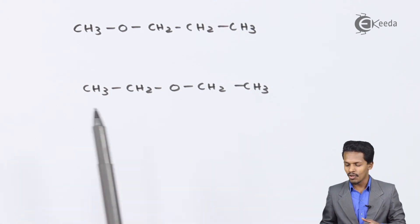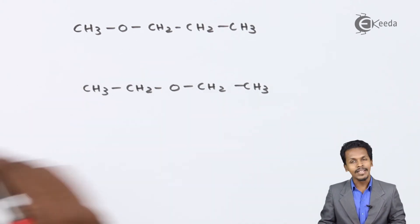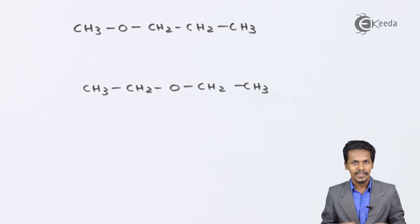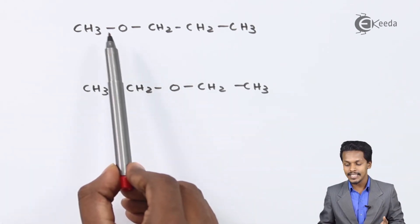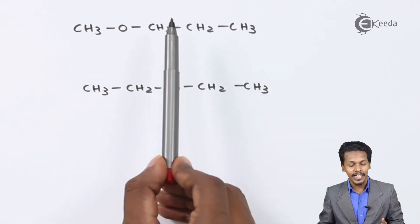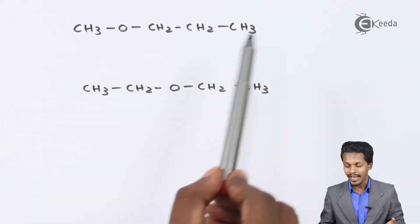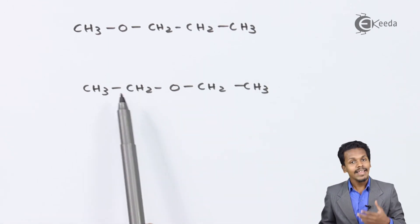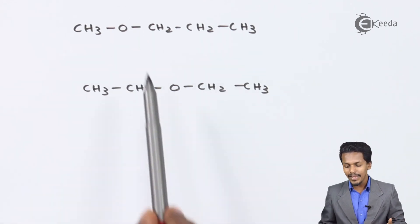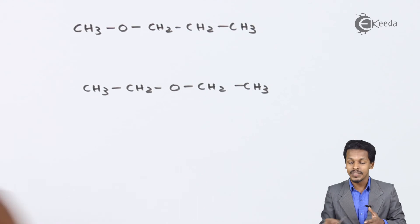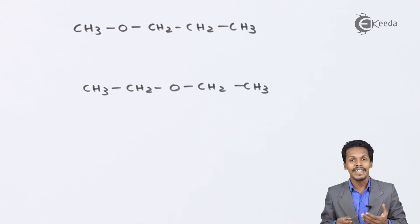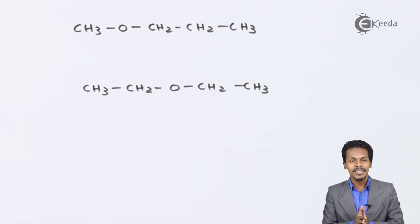The isomer of methoxypropane can be written as CH3CH2-O-CH2CH3, which is known as diethyl ether or ethoxyethane. Comparing these two, the total number of carbon, oxygen, and hydrogen atoms is the same. The only difference is that in methoxypropane one side has a methyl group and the other a propyl group, while in ethoxyethane both sides have an ethyl group. Because the alkyl groups on either side of the oxygen differ, they are positional isomers or metamers of each other.